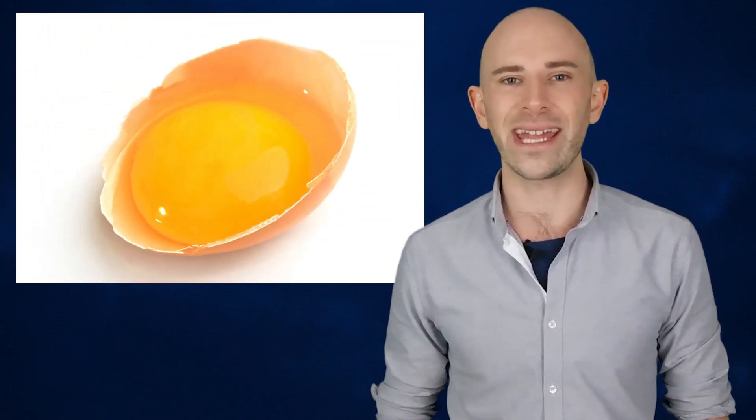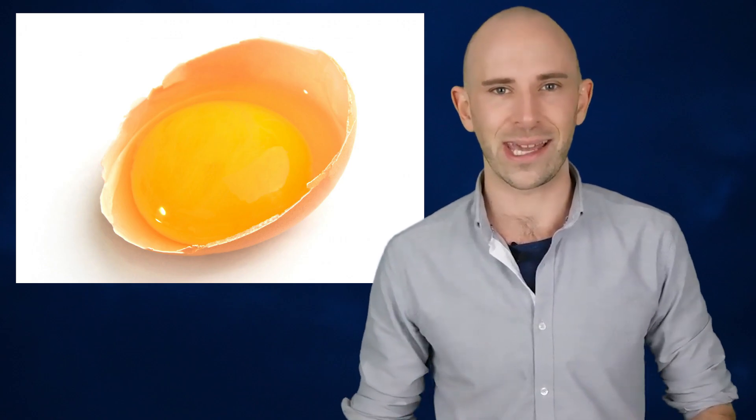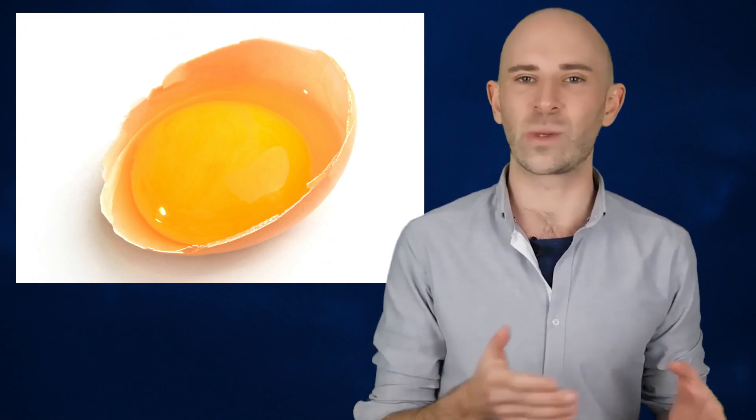Different emulsifiers work in different ways. Some, like lecithin found in egg yolks, have both a hydrophobic end that oil likes and a hydrophilic end that water likes. Thus, they are capable of bonding with oil and water.